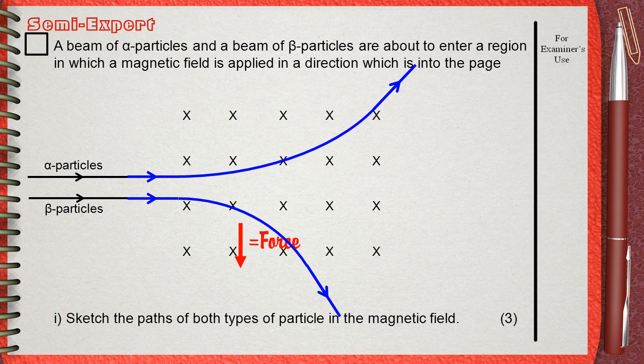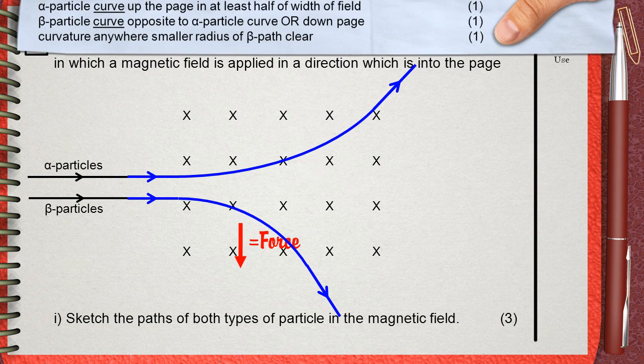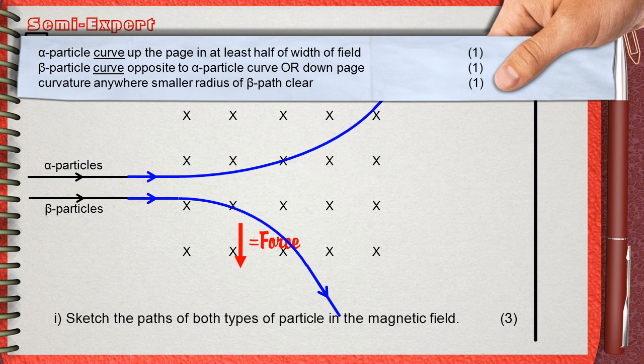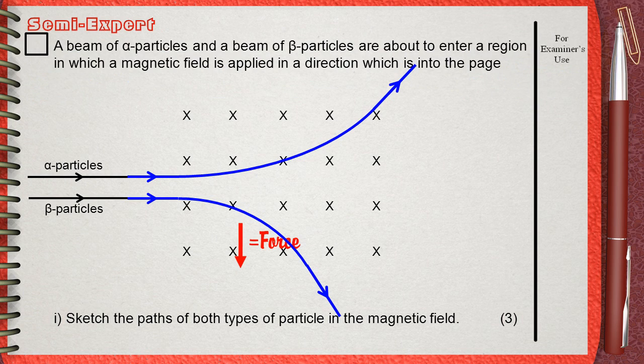Let's see what are the three marks for. Alpha particles curve up the page in at least half of width of the field gives one mark. The second mark is for beta particles curved opposite to alpha particles, or down the page. Also you must show that the radius of the curvature of the beta particle is smaller than that for alpha particle. Thank you.